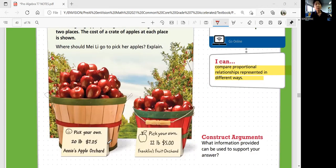For Annie's apple orchard, it says pick your own, 20 pounds is $7.25. And then Franklin's fruit orchard says pick your own, 12 pounds is $5. So every time she picks 12 pounds is $5 for Franklin's, and every time she picks 20 pounds is $7.25 for Annie's.